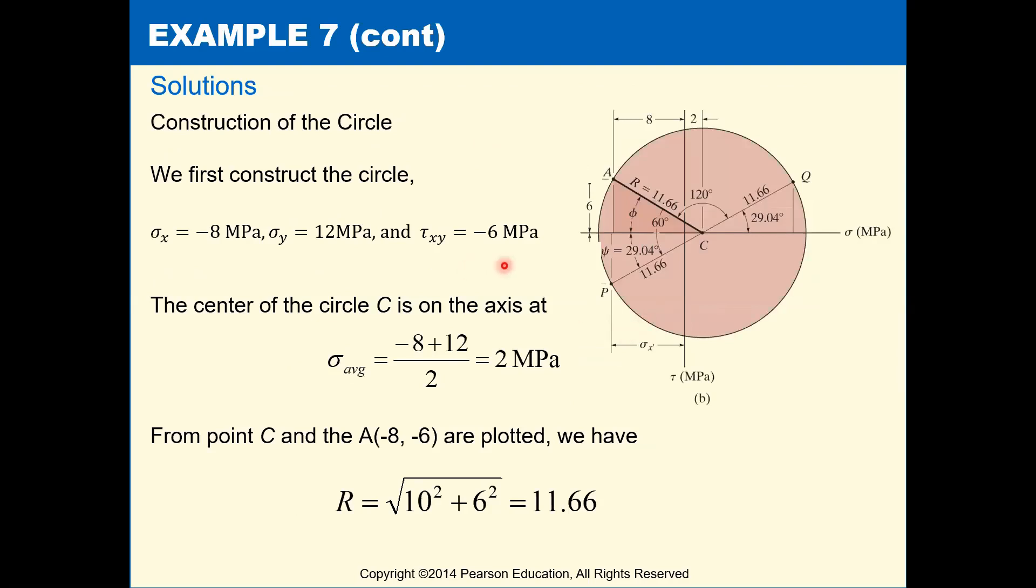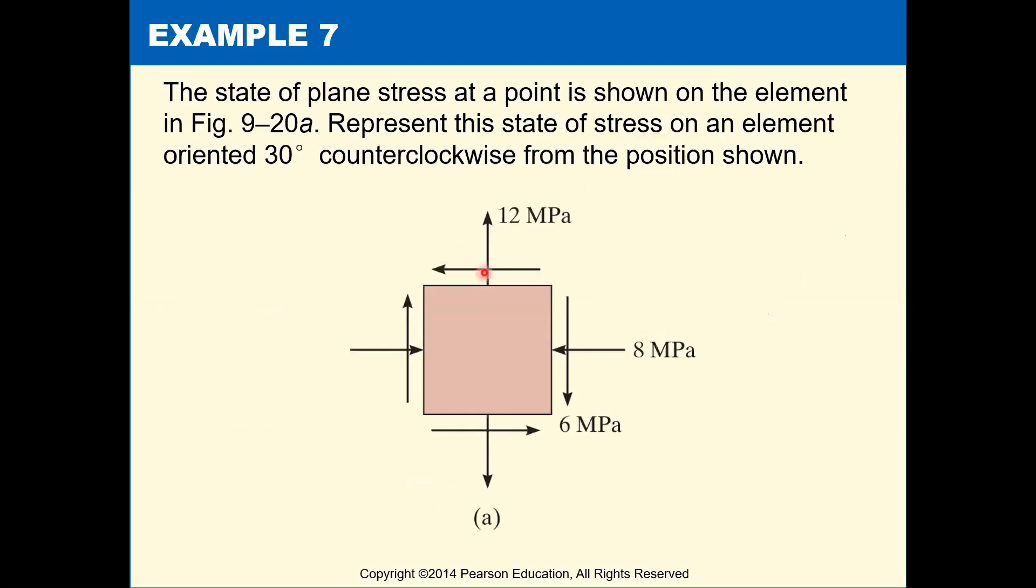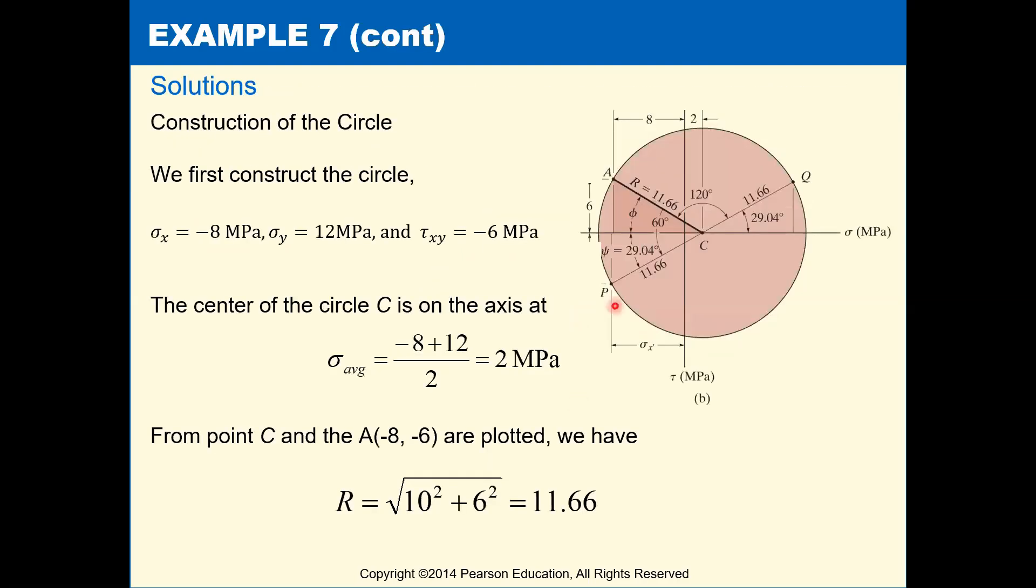So, same kind of construction of the circle though. We have our stress element where sigma x is negative 8, sigma y is 12, and tau xy was a negative 6. So our center is going to be at negative 8 plus 12 divided by 2, so that's at 2. And then our reference point is sigma x at negative 8, comma tau xy at negative 6. So we're above the sigma axis here for the negative.